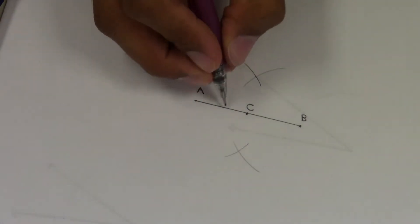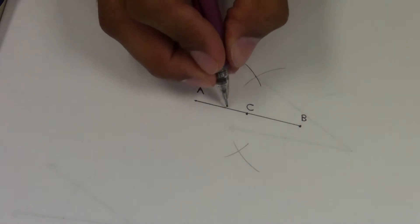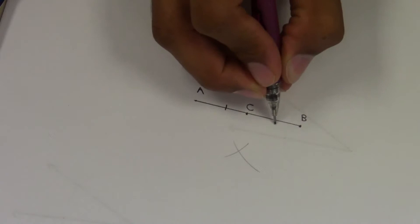Don't forget that a midpoint will break a line segment in half, where AC is congruent to CB.